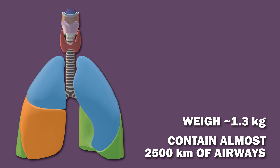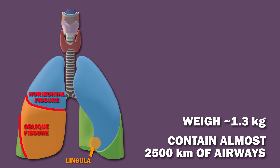However, the left lung has a structure homologous to the middle lobe of the right lung. On the left lung, the upper lobe has a projection called the lingula. The boundaries of these lobes are defined by fissures. The right lung has two fissures — one oblique and one horizontal — while the left lung has only an oblique fissure.